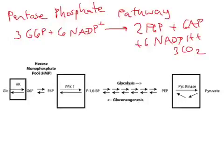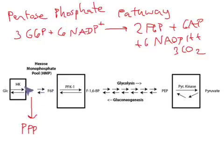Today we're going to talk about the third pathway out of the hexose monophosphate pool. One of them is glycolysis, one of them is glycogen storage, and the third one is the pentose phosphate pathway. This is also known as the hexose monophosphate shunt, and it leads off right here from G6P. G1P is used for glycogen storage, F6P is used for glycolysis, and G6P is used for pentose phosphate.